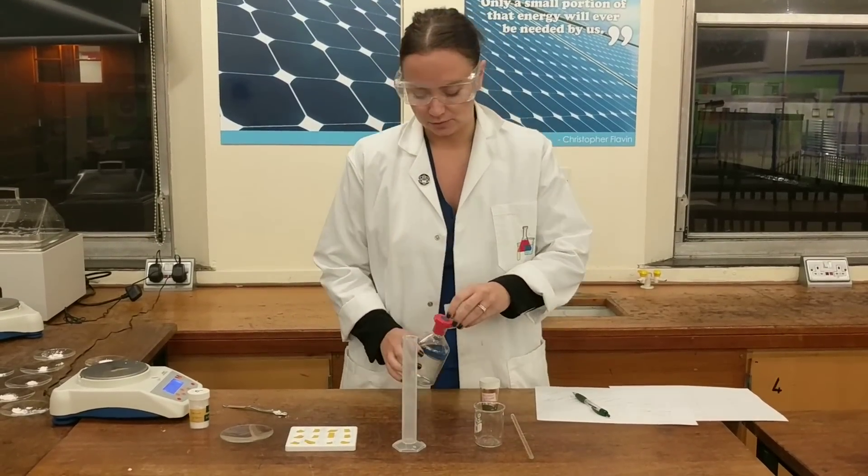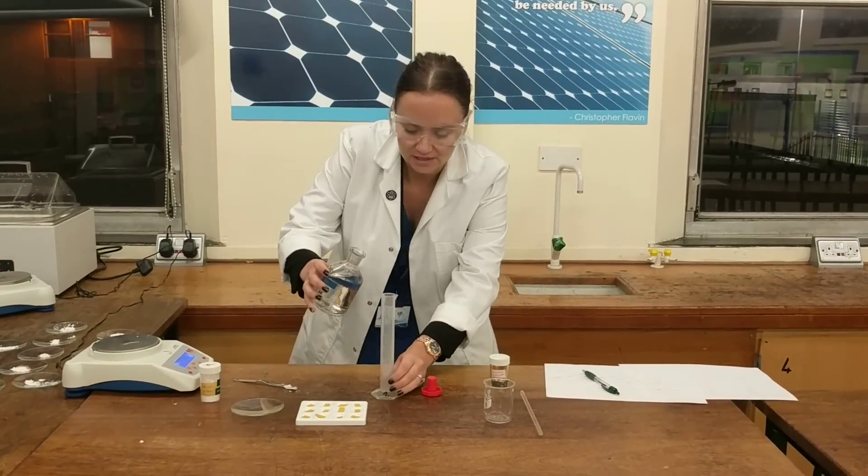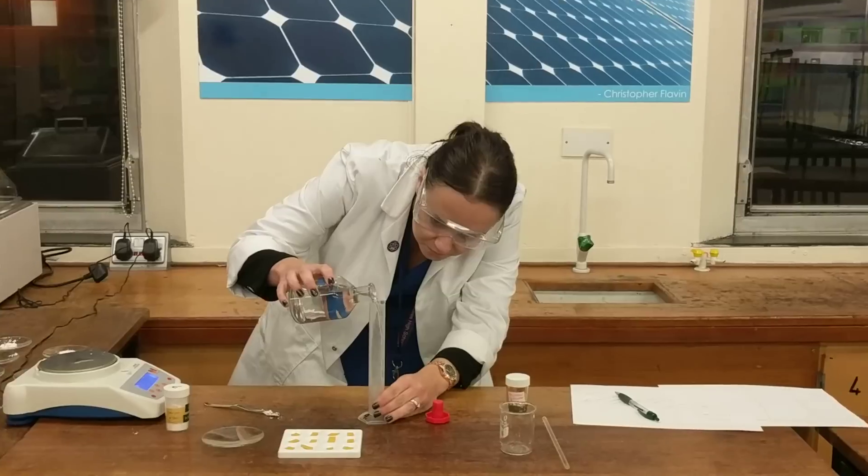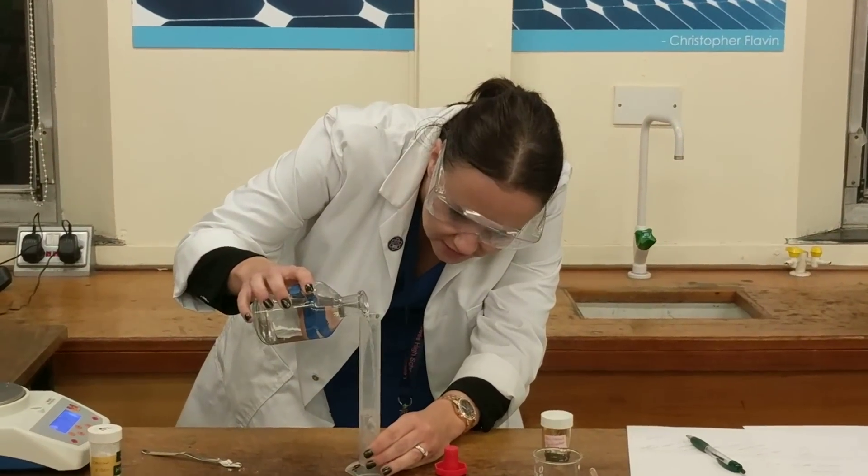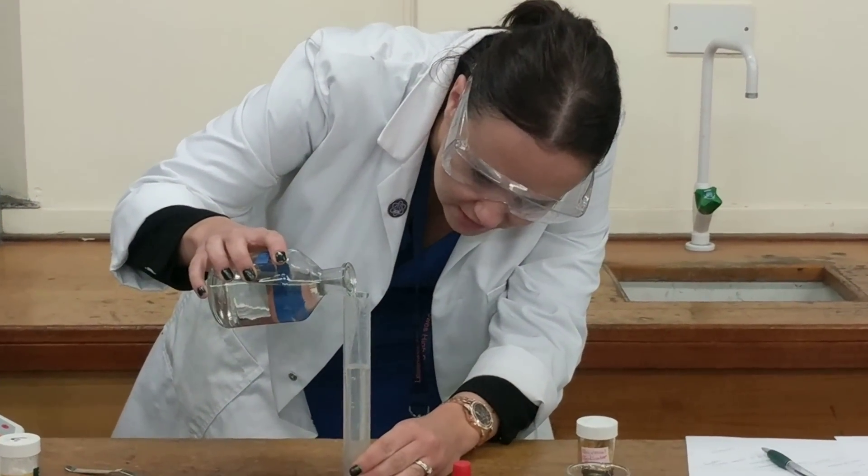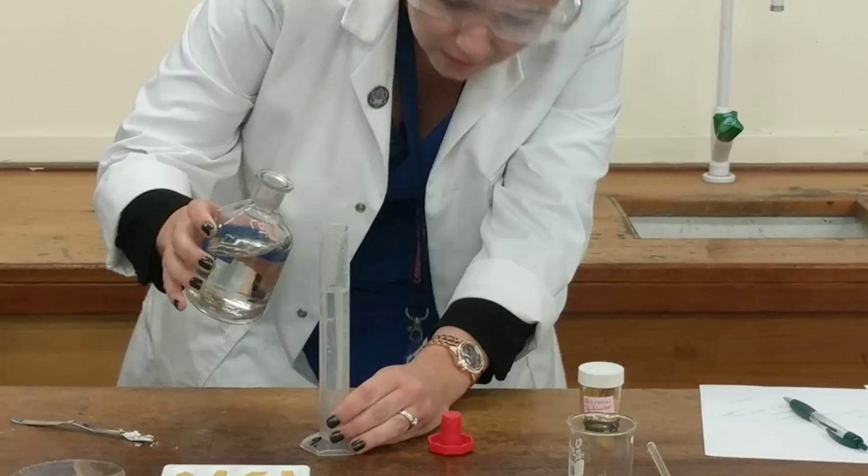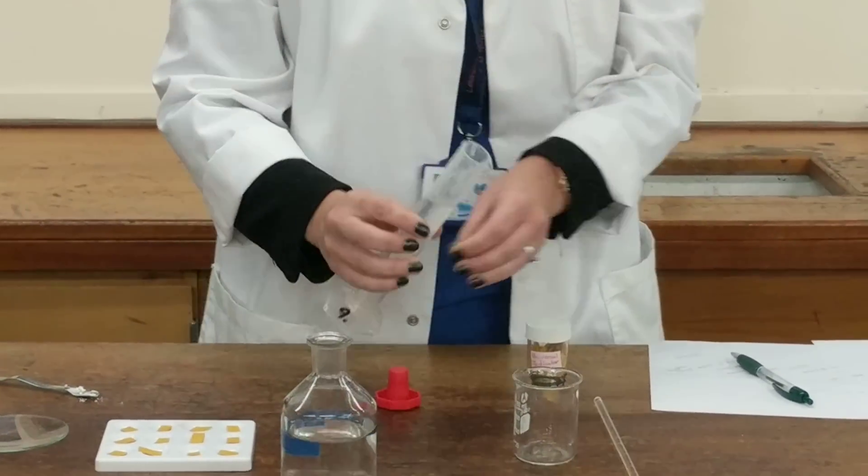So first of all we'll measure out our hydrochloric acid. We're going to be using 50 centimetre cubed, using a measuring cylinder that measures out exactly 50 centimetre cubed as this is the most accurate. And we'll put that into a beaker.